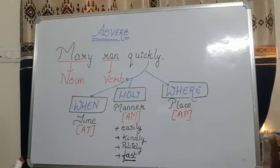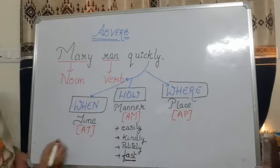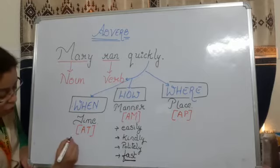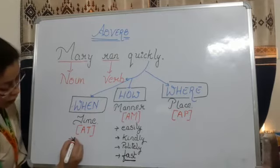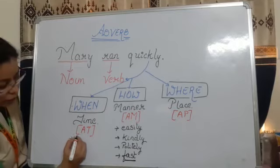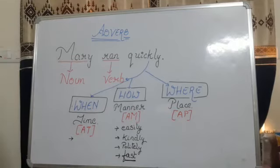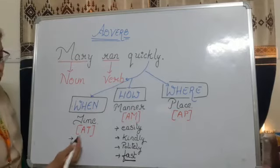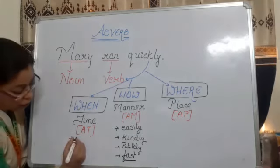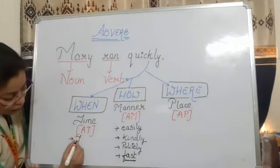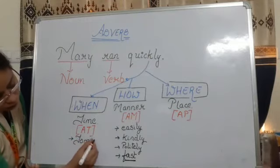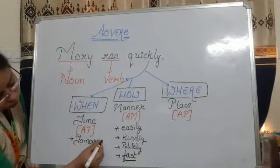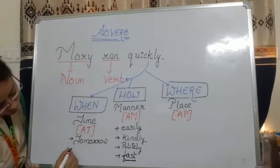Then we come to the adverb of time. Adverb of time mentions about when the work has been done. So now we are very sure about that the words that can come over here are tomorrow.